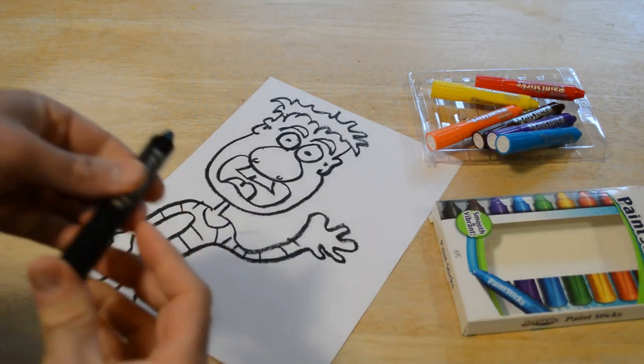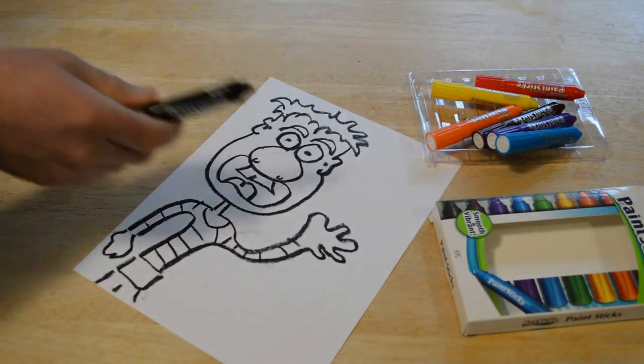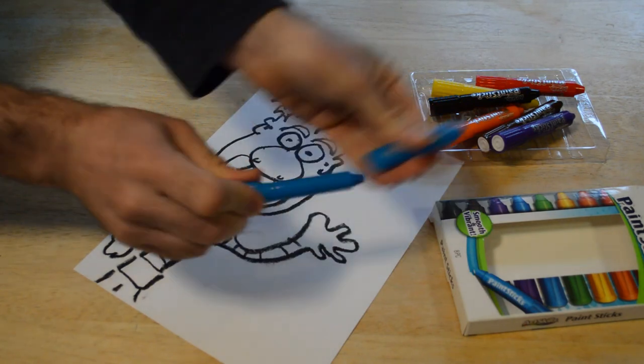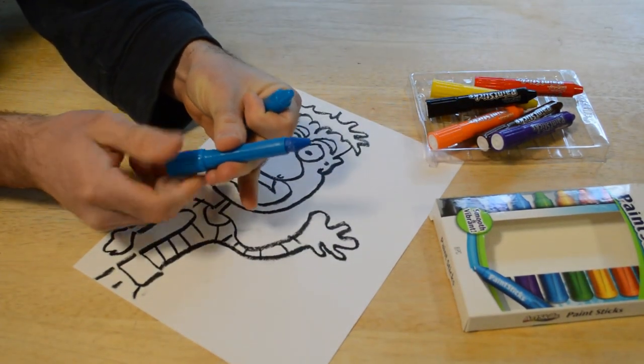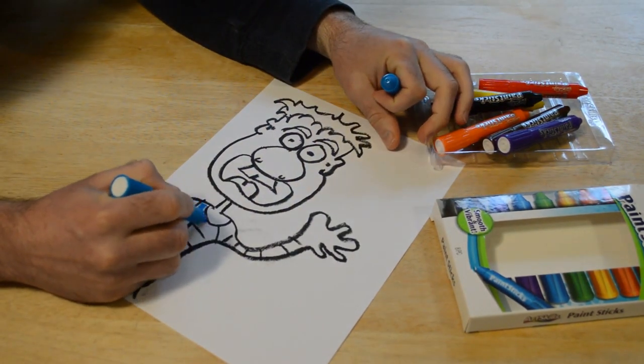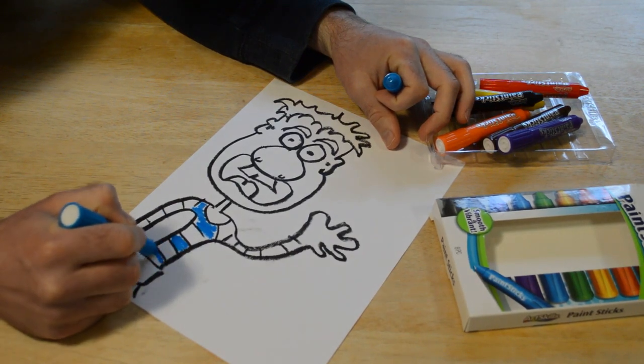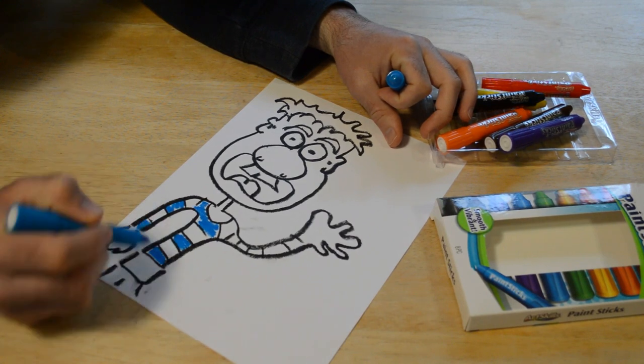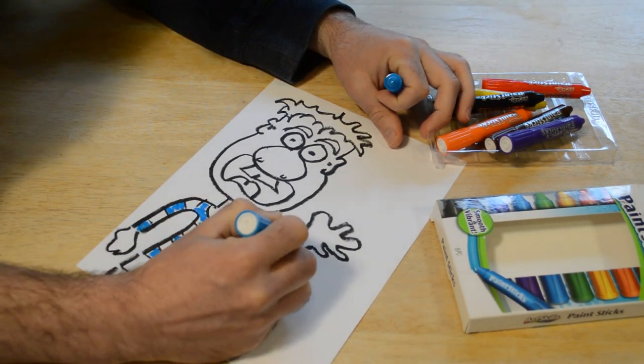Let's do some blue. You just take this off, if you ever need more you just twist this like so. Yeah, really vibrant, goes on really smooth. You just have to watch your hand not to smudge this.